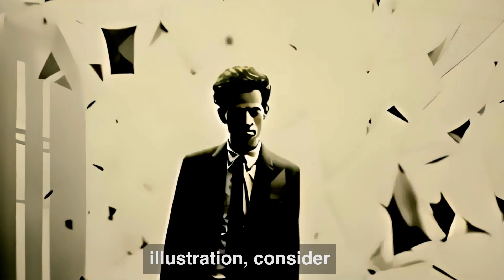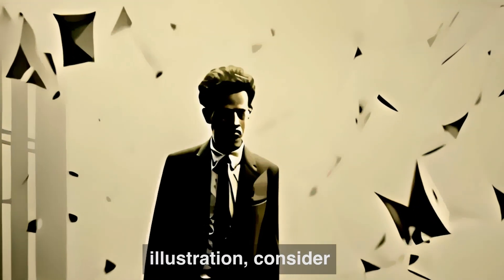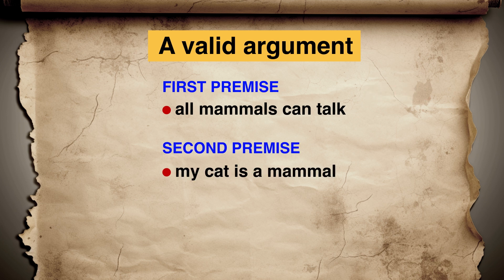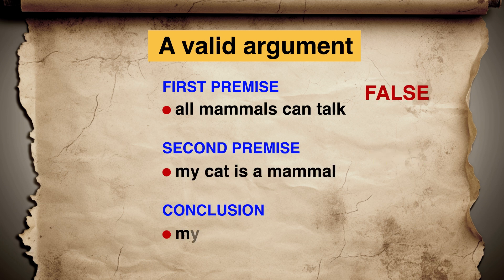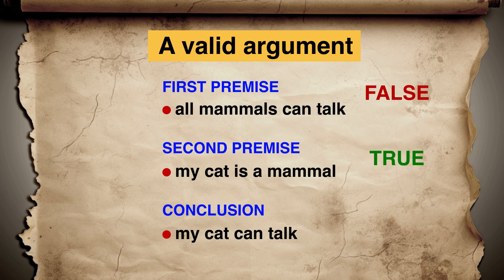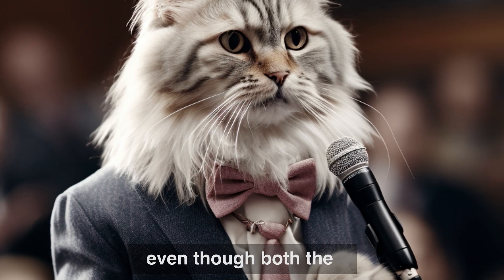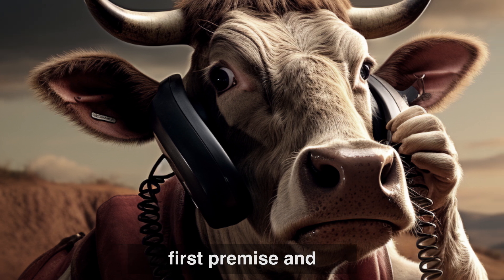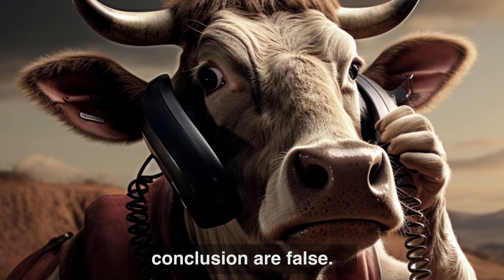As an illustration, consider the argument. Premise 1: All mammals can talk — false. Premise 2: My cat is a mammal — true. Therefore, the conclusion would be my cat can talk, which is false. This is a valid argument, even though both the first premise and the conclusion are false.